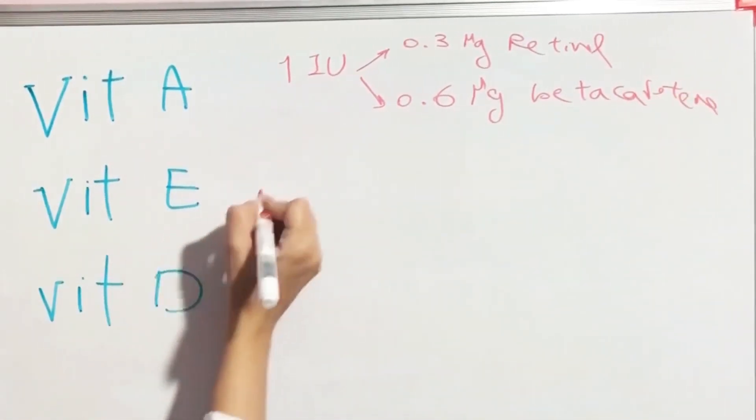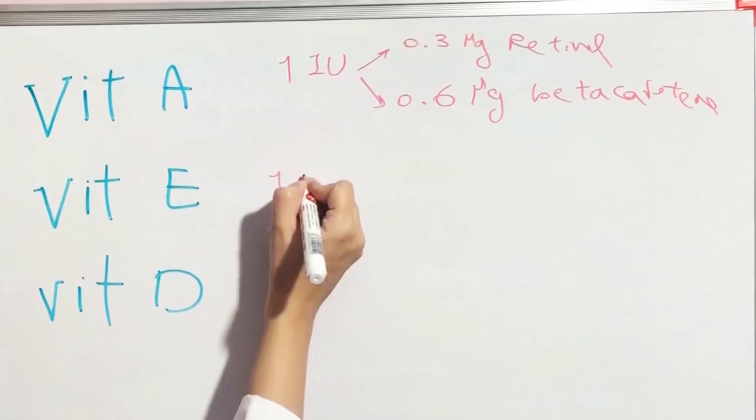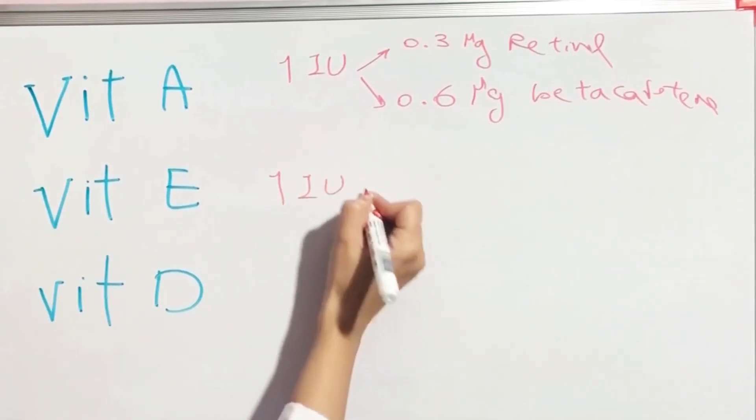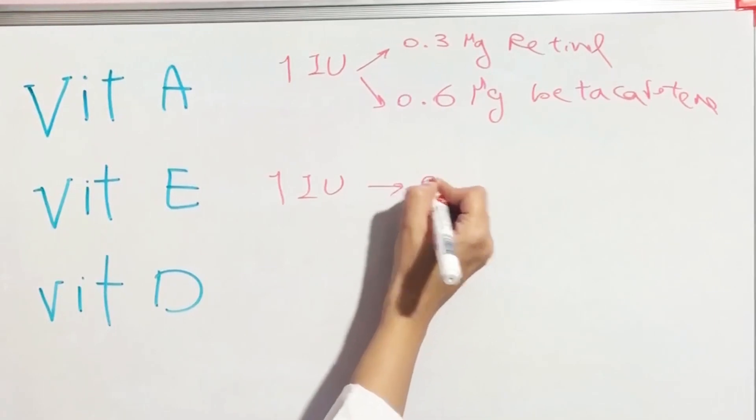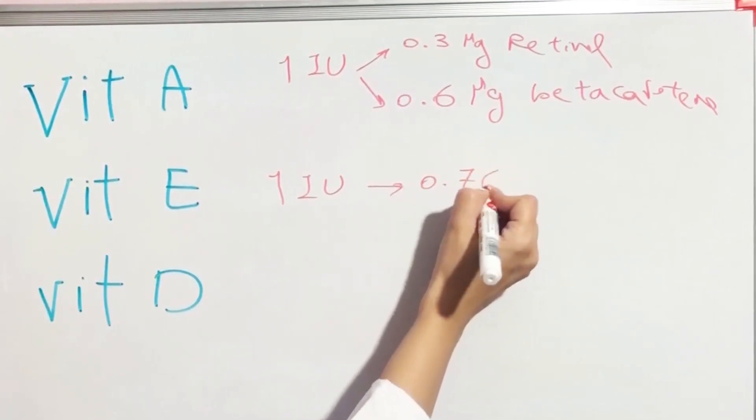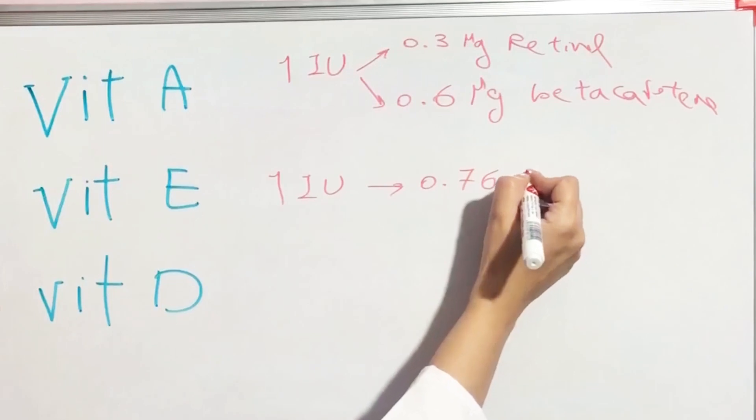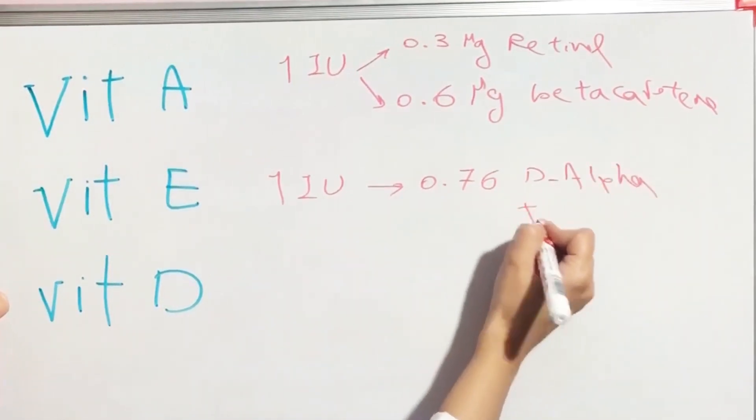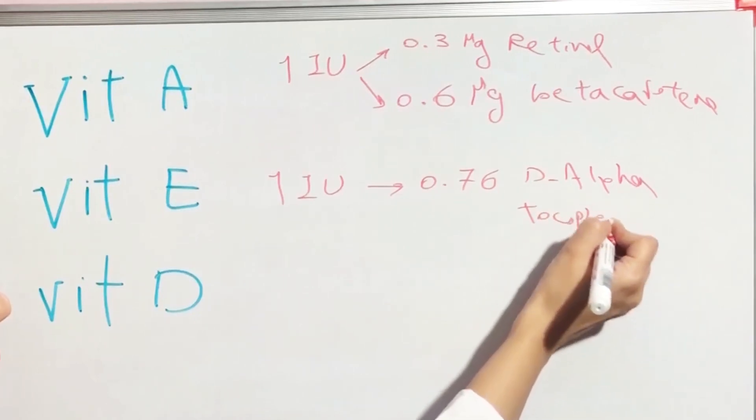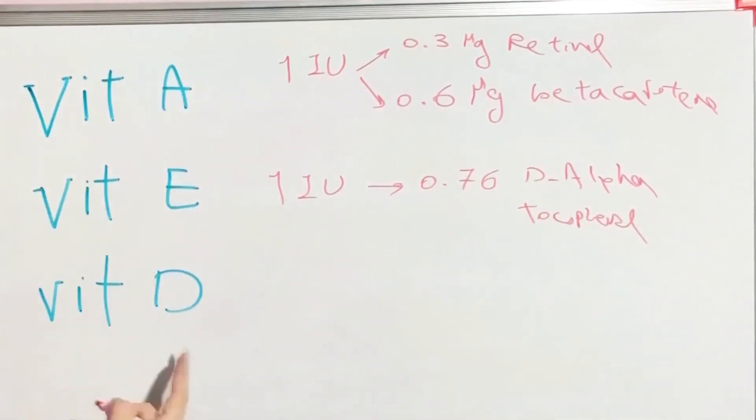For vitamin E, one international unit is equal to 0.76 natural d-alpha tocopherol. And for vitamin D, each...